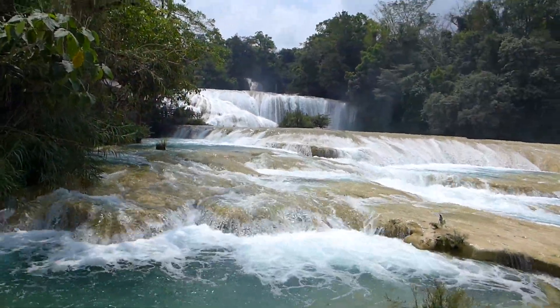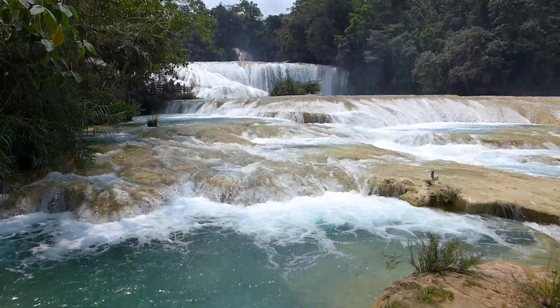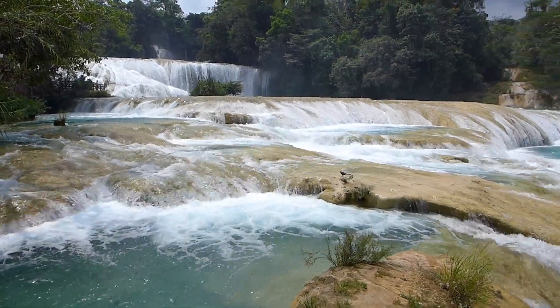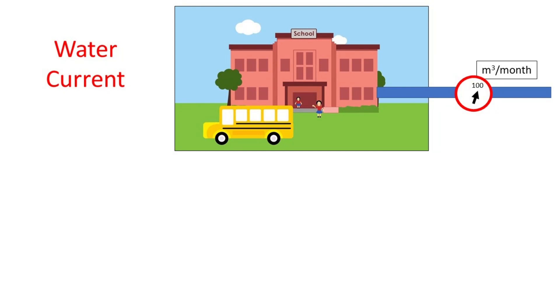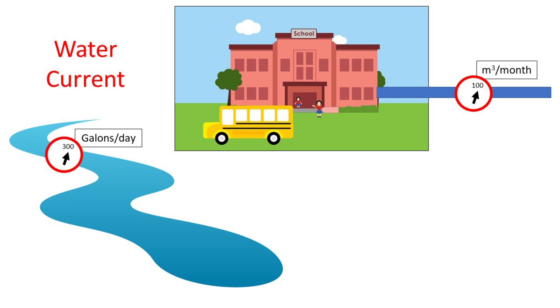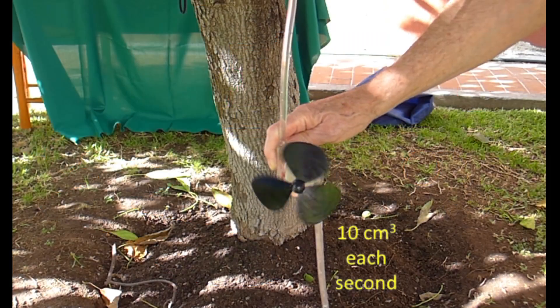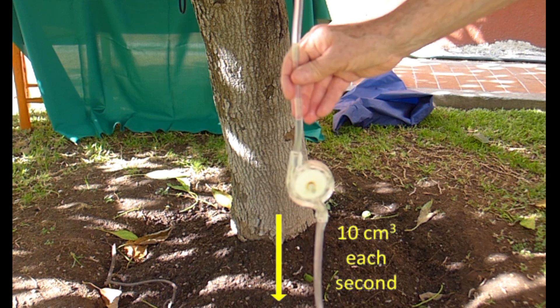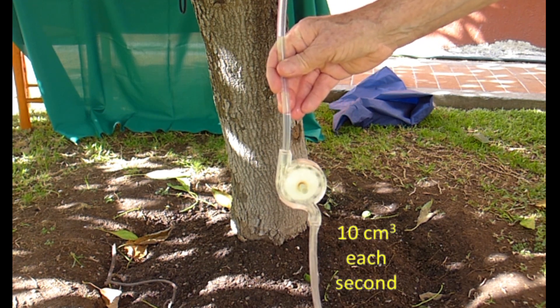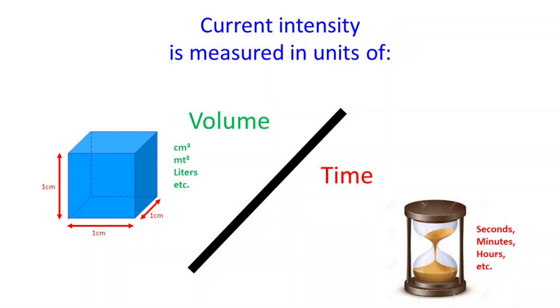Current. When water passes from one place to another, a current is said to be formed. The intensity of the water current is a number that expresses how much water passes through a place in a given time. For example, 100 cubic meters pass through the water tube that enters the school last month. About 300 gallons pass through the river every day. 20 liters of water come out through the shower every minute. 10 cubic centimeters are passing through this conductor every second. There are thousands of ways to express the intensity of the current of water that passes through a place. It is measured in units of volume between units of time.